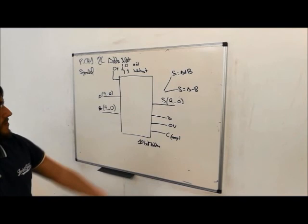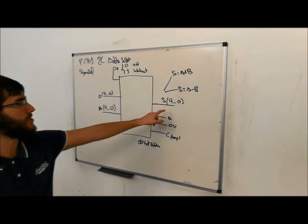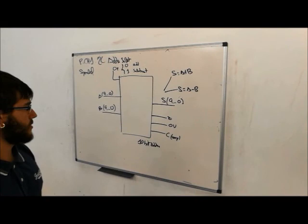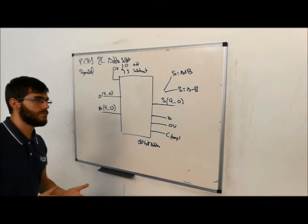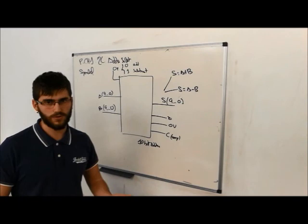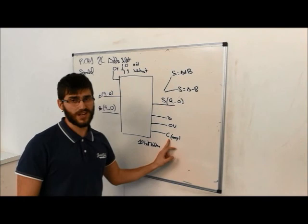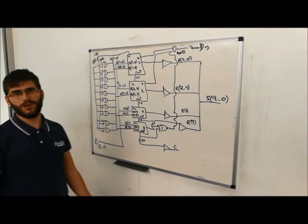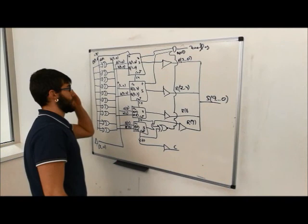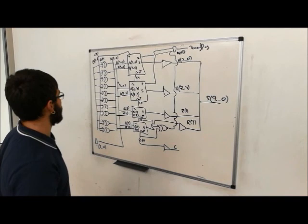Here we have the zero flag: when we have a 0 at the exit S, in Z we have a 1. And we have the overflow — you have to take care about overflow if you pass the limit of your calculator. And here is the carry, which is taken for the next operation. Now we are going to talk about the internal architecture of the 10-bit adder. We have chosen two 4-bit adders and two 1-bit adders. Here we have the structure of our 10-bit adder.